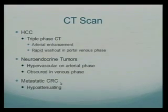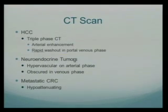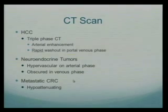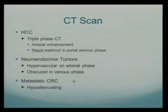For metastatic colorectal carcinoma, the distinguishing factor is that it would not enhance as much as neuroendocrine tumors or hepatocellular carcinoma on the arterial phase. Metastatic lesions from colorectal or breast cancer will actually be less bright compared to the normal liver parenchyma, versus HCC and neuroendocrine tumors which are brighter.